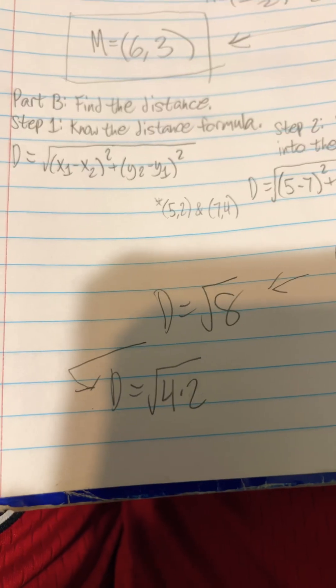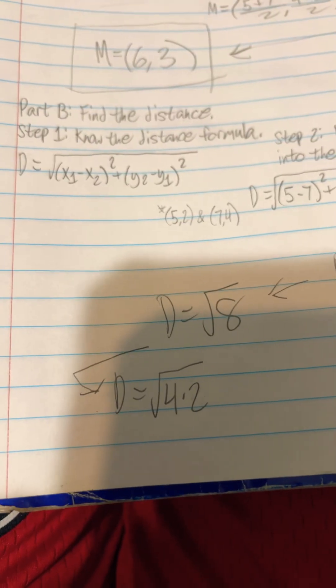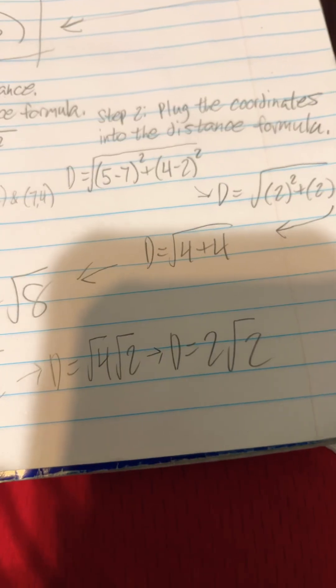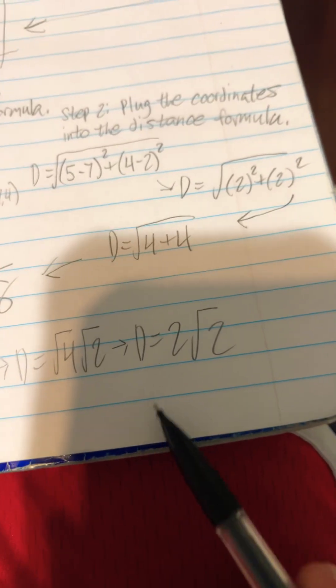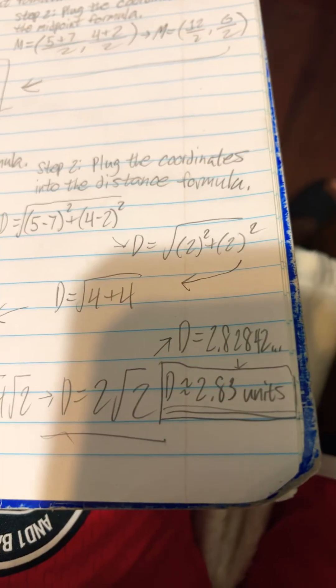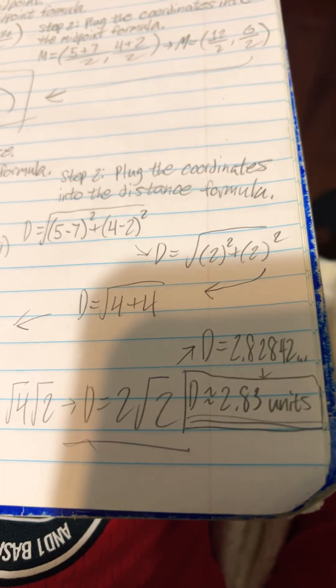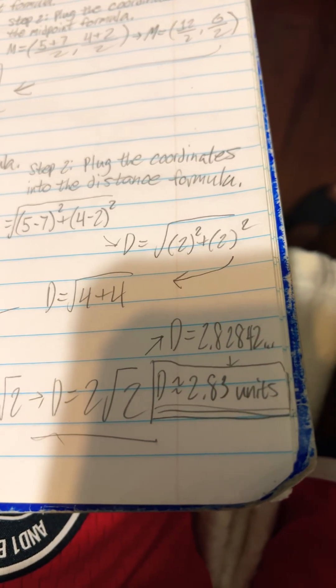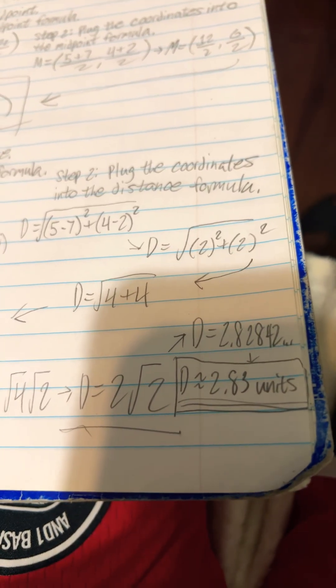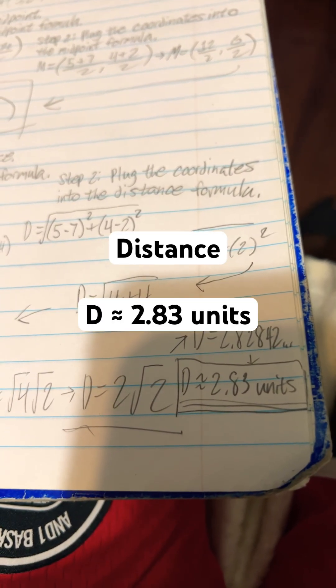But hold on, we're not done yet — we still have to rewrite it. So D equals 2 radical 2. And as a decimal, we can write this as distance D is approximately 2.83 units.